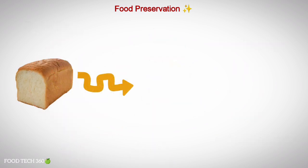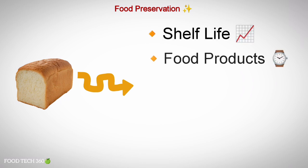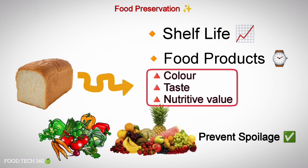In a food preservation process, the shelf life of the product is increased, food products last for a long period of time, fruits and vegetables are prevented from getting spoiled, and the color, taste, and nutritive values of food are also preserved.